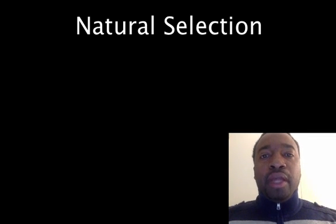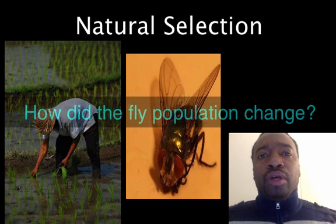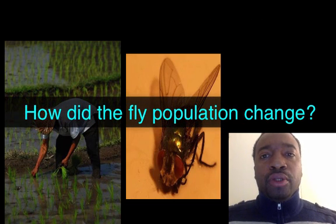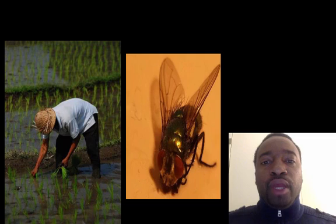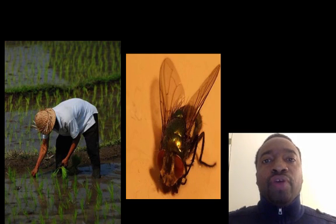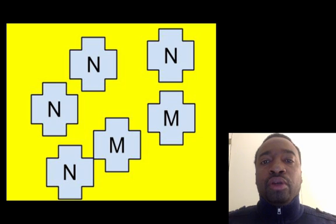This video is about natural selection, but first, think back to our farmer fly story and recap: how did the population of flies change? The farmer had an issue with flies and tried to use insecticide, but they survived repeated exposures. So the beginning population were vulnerable to insecticide, but the final population were resistant to insecticide.